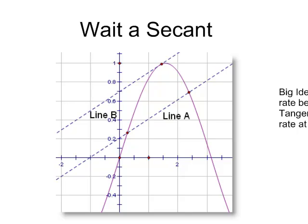So our question is basically just a review of what you've learned in functions. The basic concept here is a secant, which is this line — line A — and it is used to measure average rate of change.